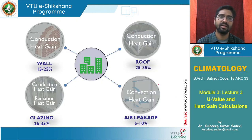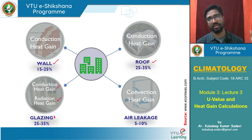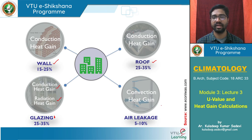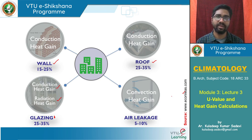Conduction through walls happens majorly through conduction, and from the roof also through conduction. If the roof has a skylight, we go for glazing where we have both conduction and radiation. If glazing is opened, we also have convection heat gain or loss and air leakages. These percentages shown are for residential buildings in India, taken from the Econiverse website, which specifies limits for conduction, radiation, and heat gains through parameters like U-values and SHGC.